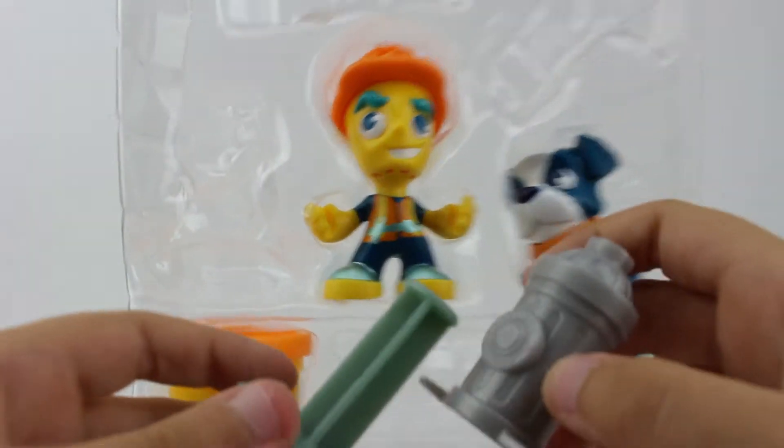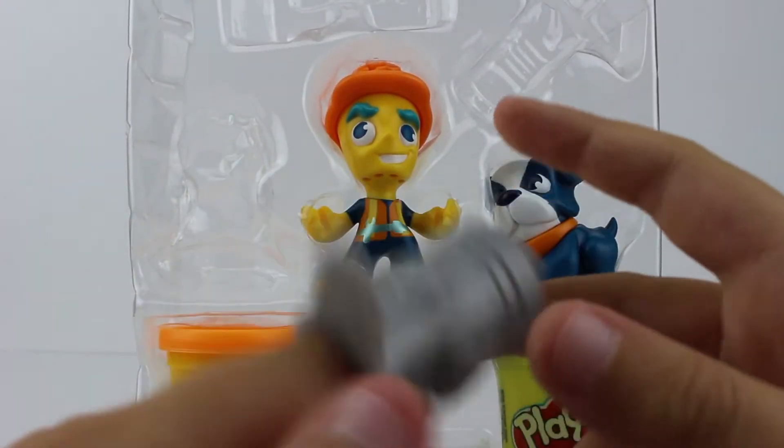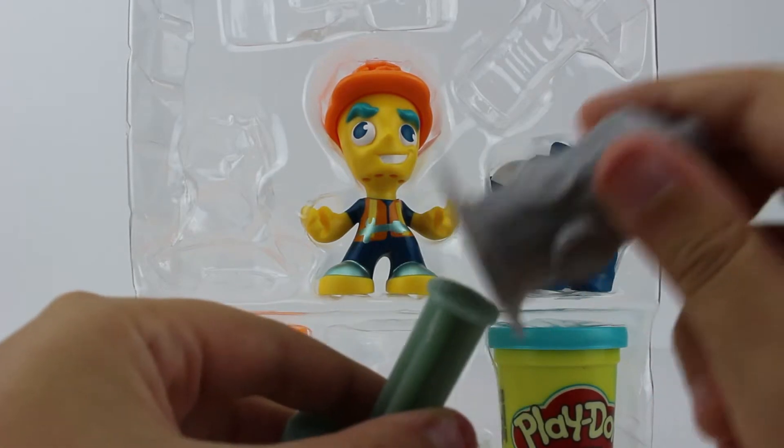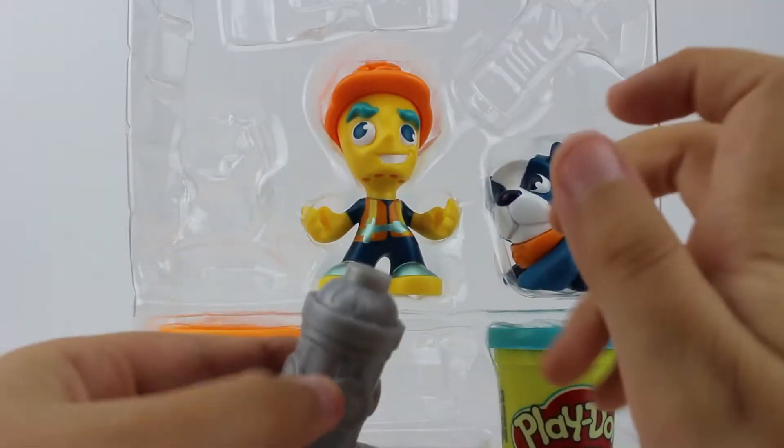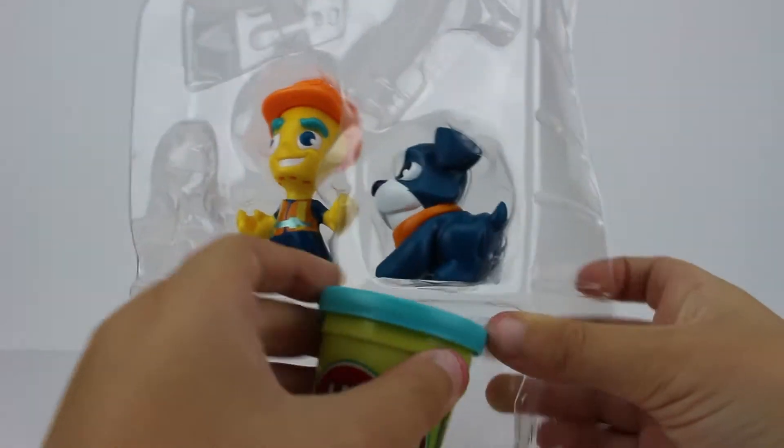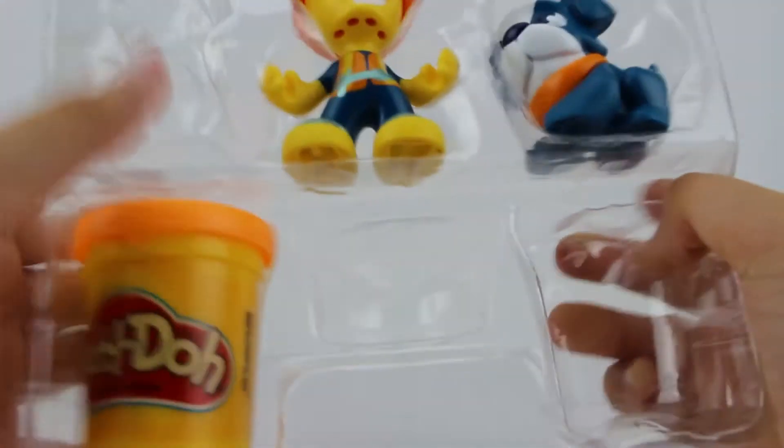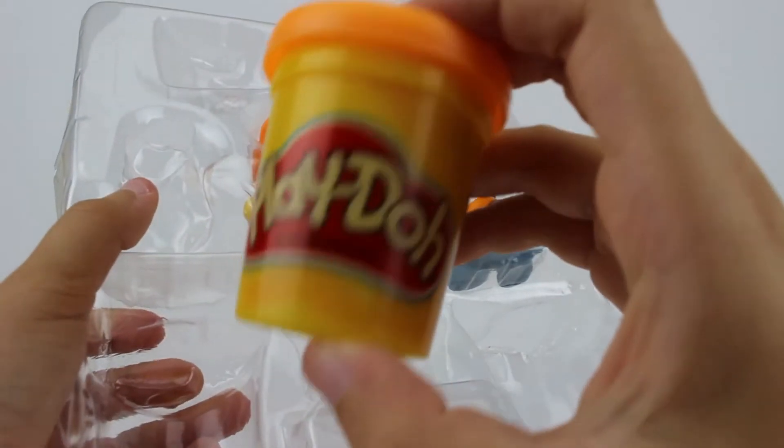And then this is the fire hydrant. You fill the fire hydrant with some Play-Doh and then you push it through this. And then it starts popping out. And this is the blue colored Play-Doh. And the orange colored Play-Doh.